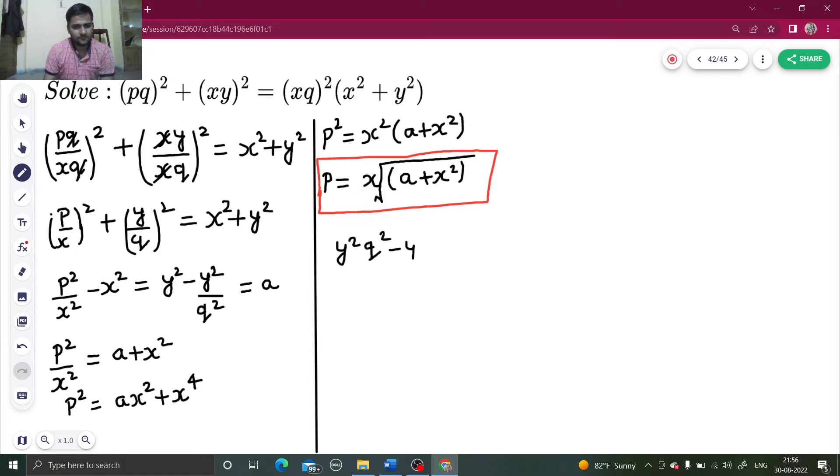Y squared minus Y squared by Q squared equals A Q squared. Taking Q squared terms to one side, so Q squared times Y squared minus A equals Y squared.